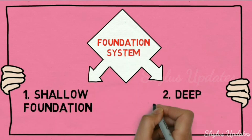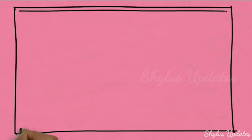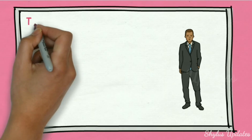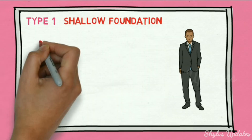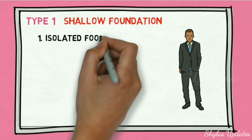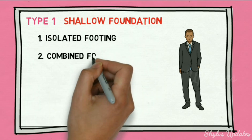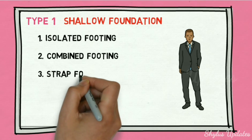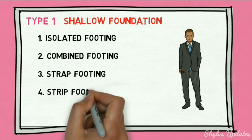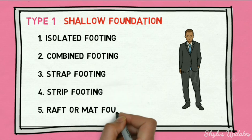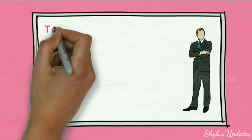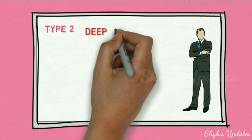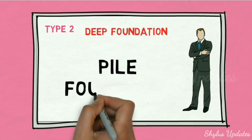Foundation systems are classified as: shallow foundation and deep foundation. Type 1 — shallow foundation includes isolated footing, combined footing, strap footing, strip footing, and raft or mat foundation. Type 2 — deep foundation includes pile foundation.